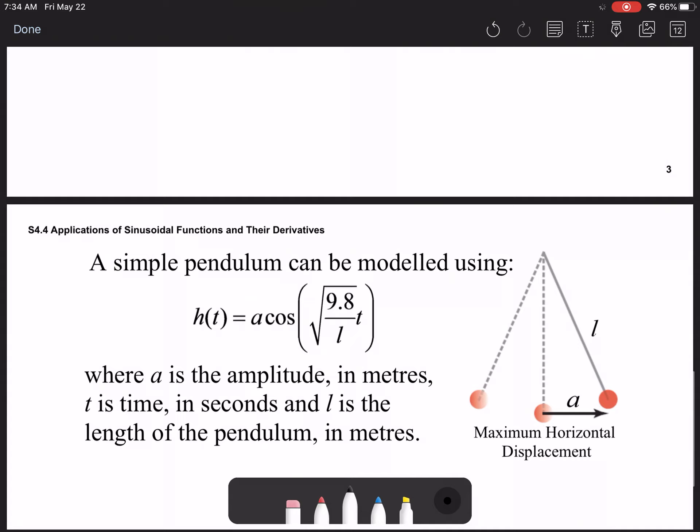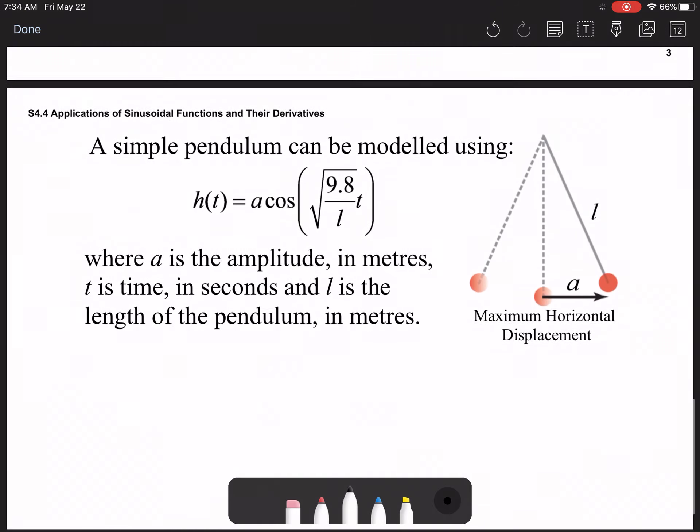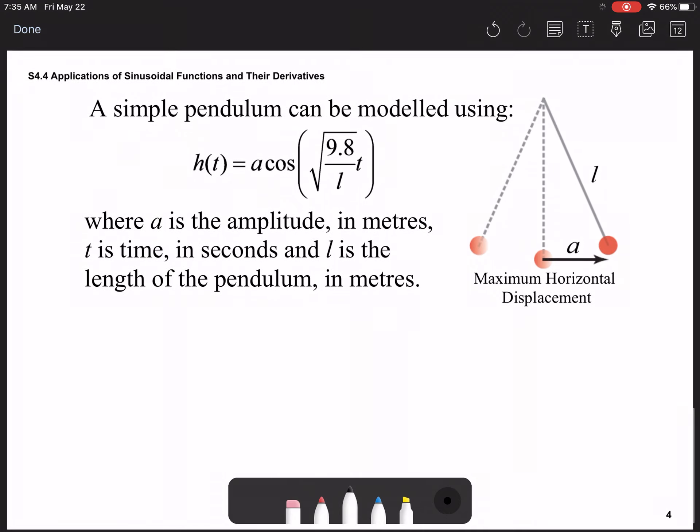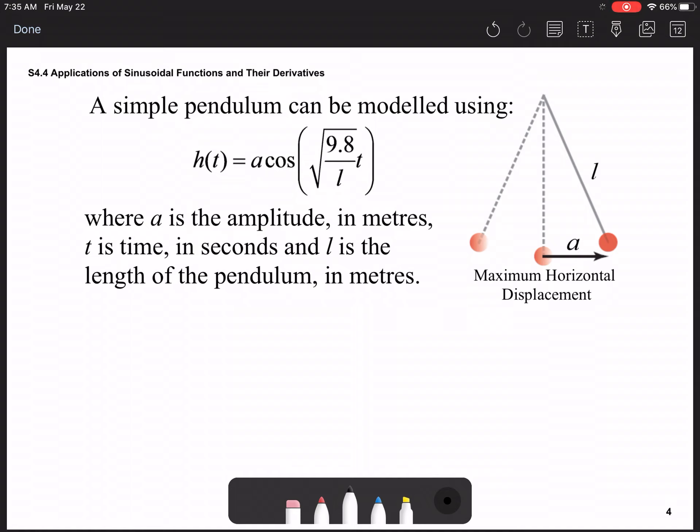Now, some of the problems that you're going to see today also deal with a model similar to this one. And I'd be a bad math teacher if I didn't show you this. So, a simple pendulum can be modeled using this kind of function. This length a, from the center point to the outside edge is your maximum horizontal distance. It's going to be measured in meters.